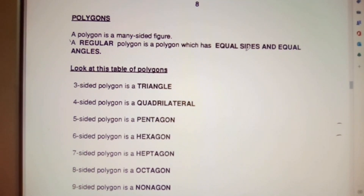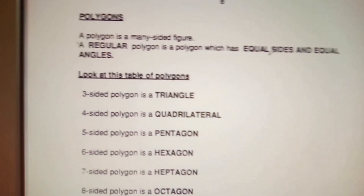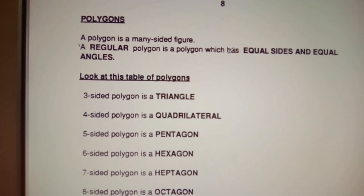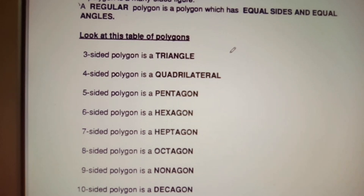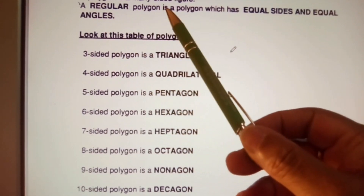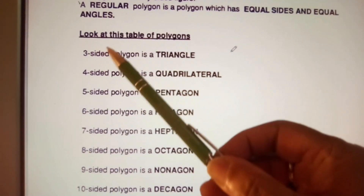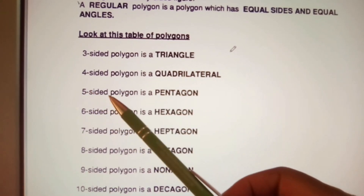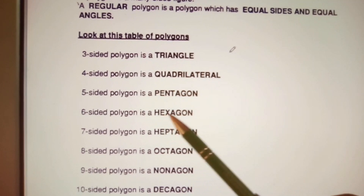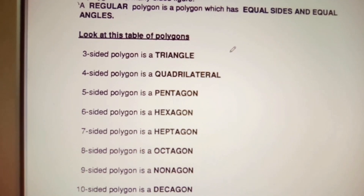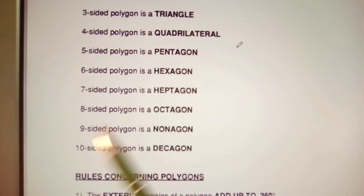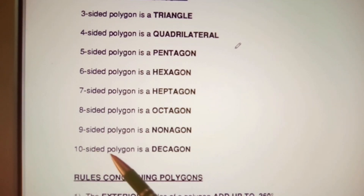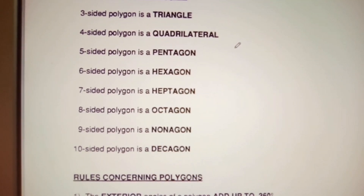A polygon is a many-sided figure. A regular polygon is a polygon which has equal sides and equal angles. Here is a table of polygons: a three-sided polygon is a triangle; four-sided is a quadrilateral; five-sided is a pentagon; six-sided is a hexagon; seven-sided is a heptagon; eight-sided is an octagon; nine-sided is a nonagon; ten-sided is a decagon. These almost sound like something from Jurassic Park.